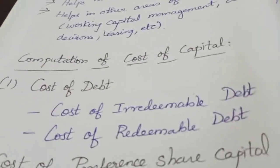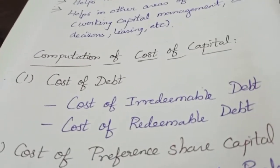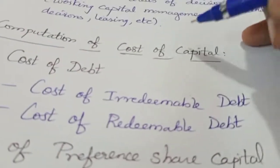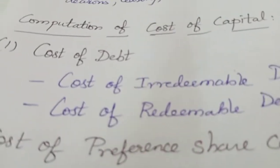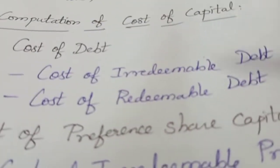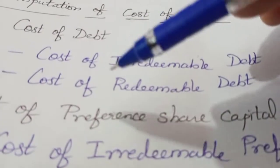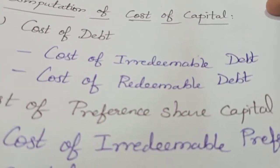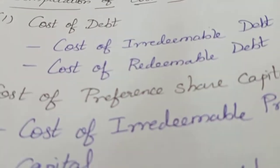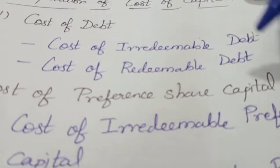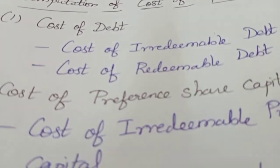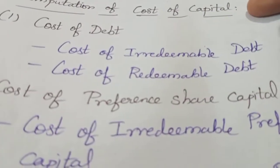If the debt has no repayment — if you keep it in business forever — that is irredeemable debt. Cost of redeemable debt means that after a maturity period — five years, seven years, ten years — you will repay the debt. That is redeemable debt.